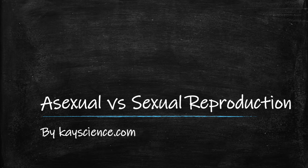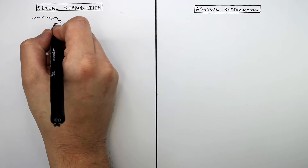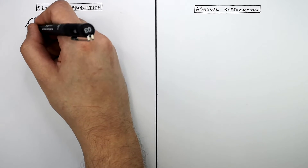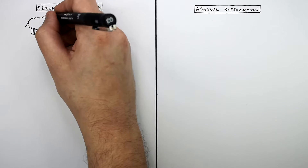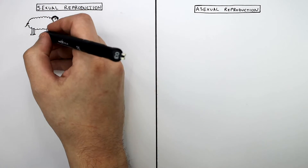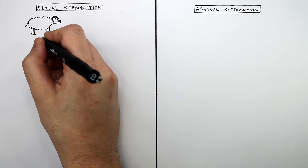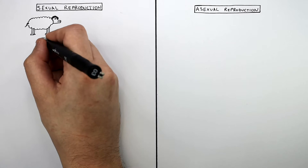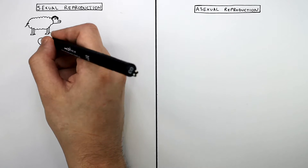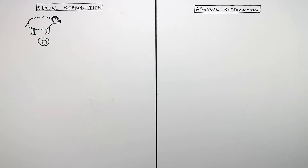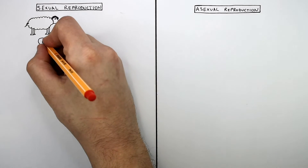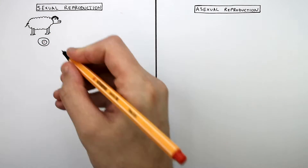Asexual vs. Sexual Reproduction by KScience.com. This here is a female sheep with black hair on its head and long legs. Because it's a female sheep, its gamete is going to be an egg, and it's a haploid cell with a haploid number of chromosomes in the nucleus.